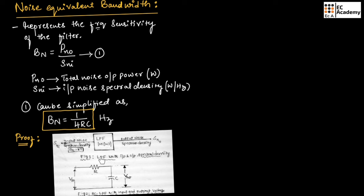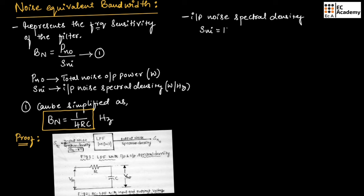To prove this, let us consider a low-pass filter with input and output spectral density. The low-pass filter has a transfer function H of j omega, with input noise spectral density SNI equal to KT and output noise spectral density SN0. Figure 2 shows the equivalent circuit, which is an RC low-pass filter with a resistor and capacitor connected in series, and the output is measured across the capacitor.